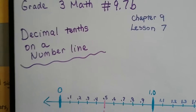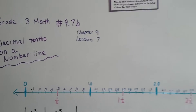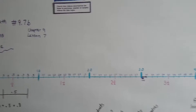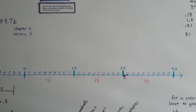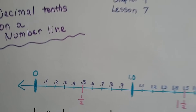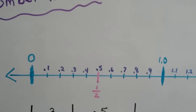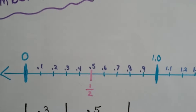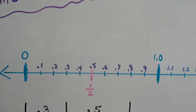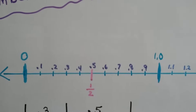I drew a very big number line. Let me step back and show it to you. That number line goes on and on. Each little line on this number line — because all number lines can be different — each little line is a tenth.